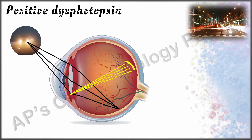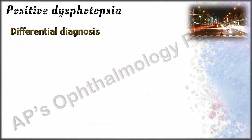Some of the steps taken to reduce the incidence of positive dysphotopsia by the manufacturers include rounding the anterior aspect of the square edge, reducing square edge thickness, leaving the IOL edge unpolished, and moving the IOL optical power more to the anterior rather than the posterior optic surface.